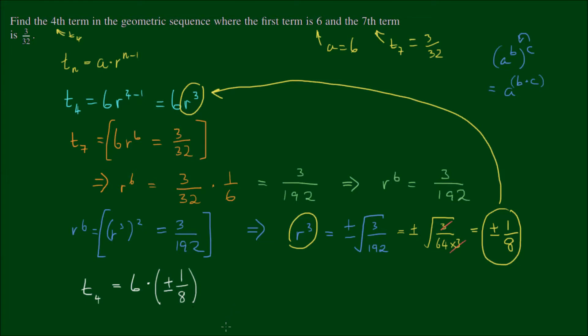So the fourth term can take on two different values. There are two possible values for the fourth term. It's either positive or negative 6 on 8, which is positive or negative 3 quarters. Therefore, t4 can be equal to 3 quarters, or t4 can be equal to negative 3 quarters.